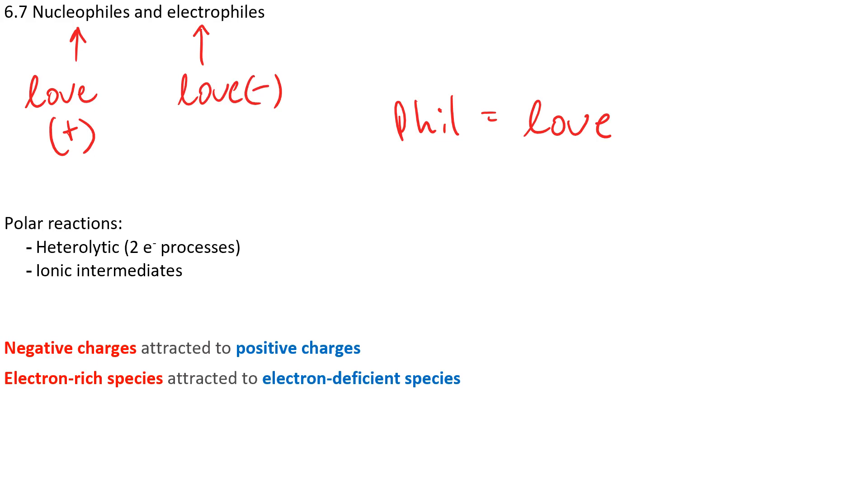This is for polar reactions, where we have heterolytic processes. So two electrons from a bond are transferred to one of the atoms, resulting in the more electronegative atom becoming an anion and the less electronegative atom becoming a cation.